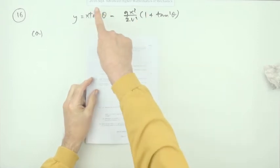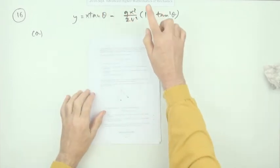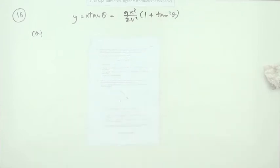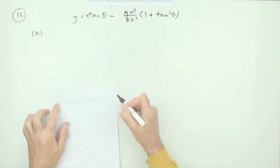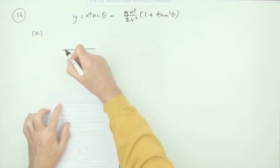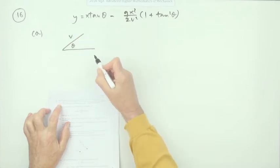Number 16 from the 2016 SQA advanced higher mathematics mechanics. Projectile motion for eight marks. The first three marks is to derive this coordinate equation for the projectile motion. A ball is projected from horizontal ground with initial speed V at an angle of elevation theta.